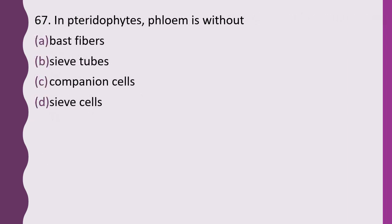Question 67. In pteridophytes, phloem is without: bast fibers, sieve tubes, companion cells, or sieve cells. The correct answer is option C — phloem in pteridophytes is without companion cells.